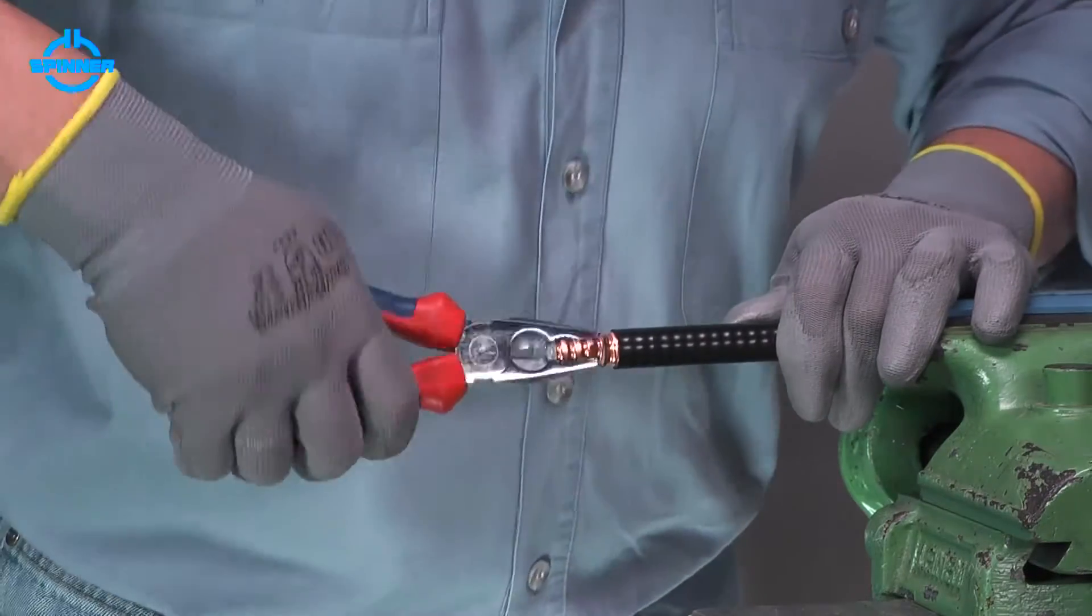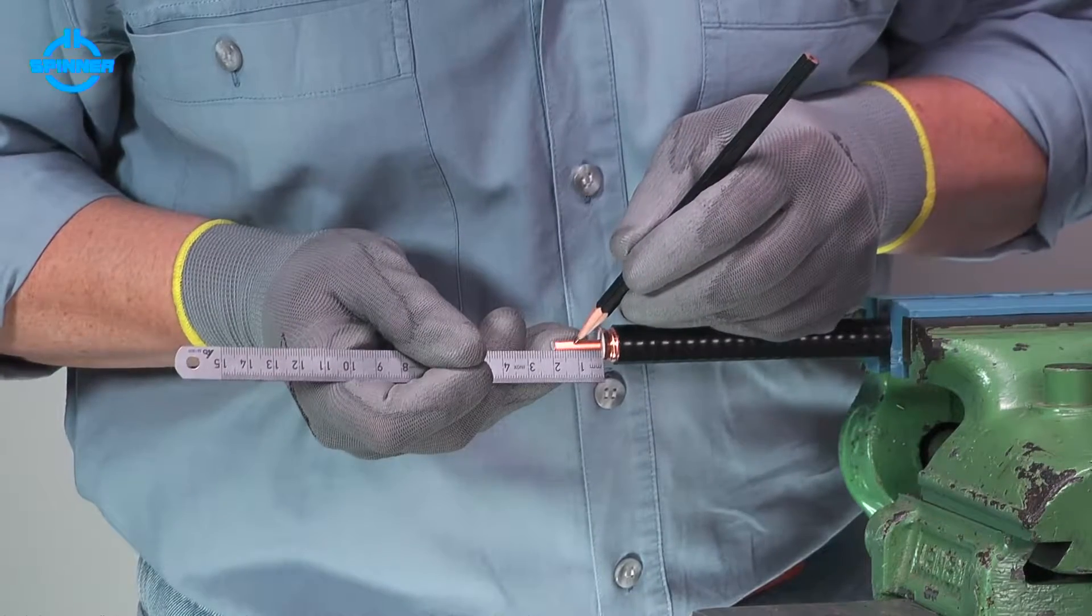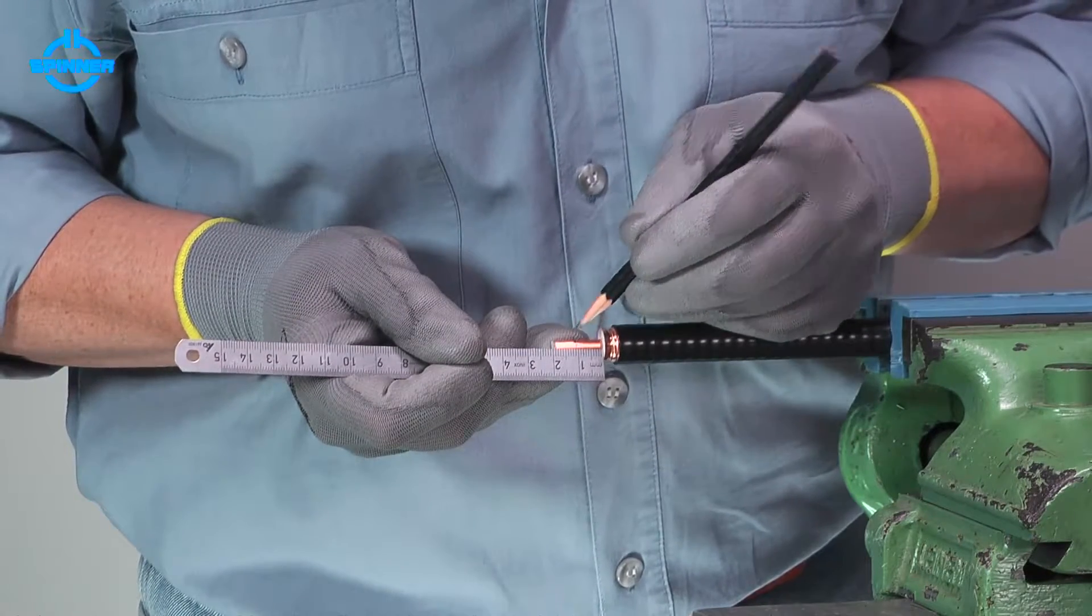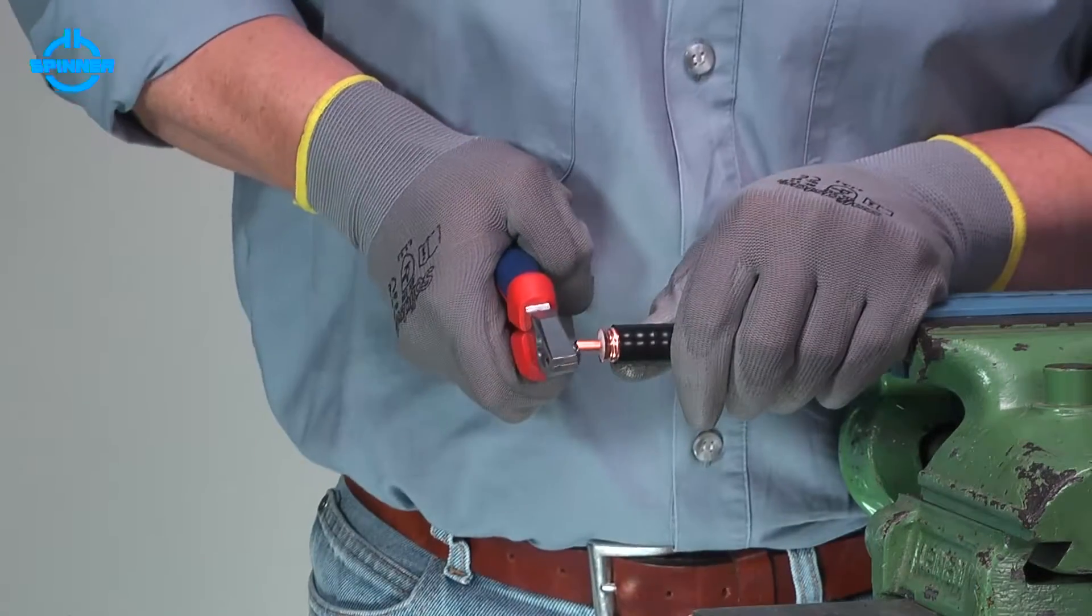Remove outer conductor with foam using pliers. Shorten the inner conductor using side cutter pliers to the dimension given in the installation instructions.